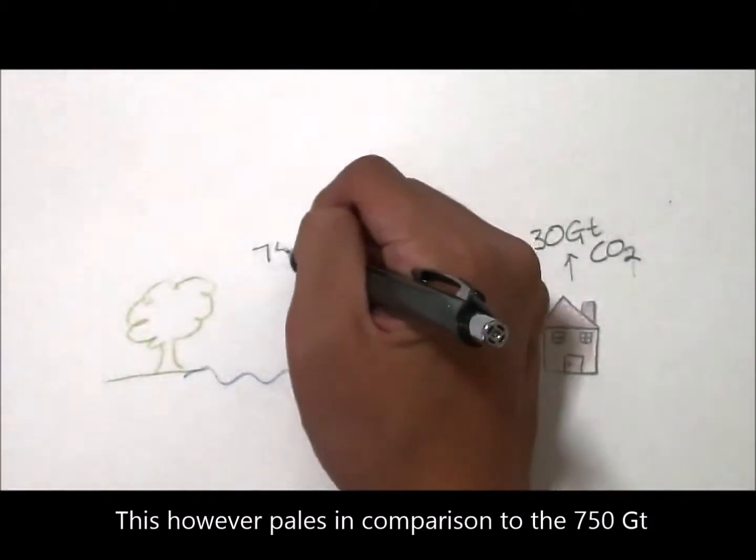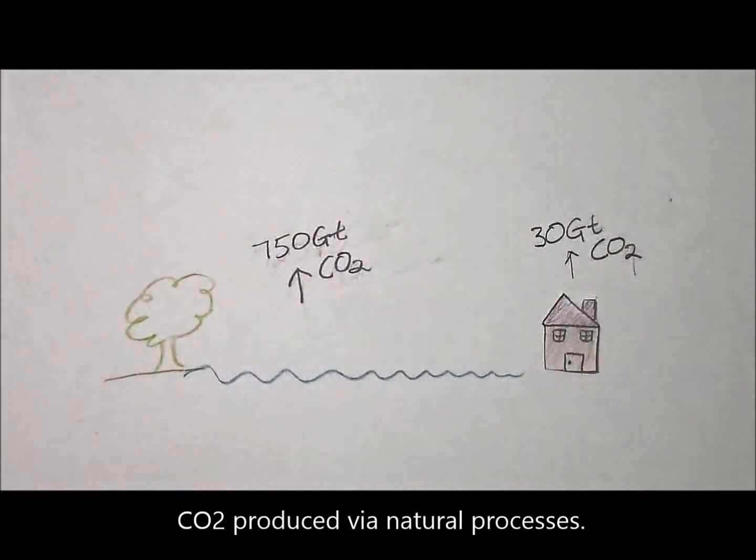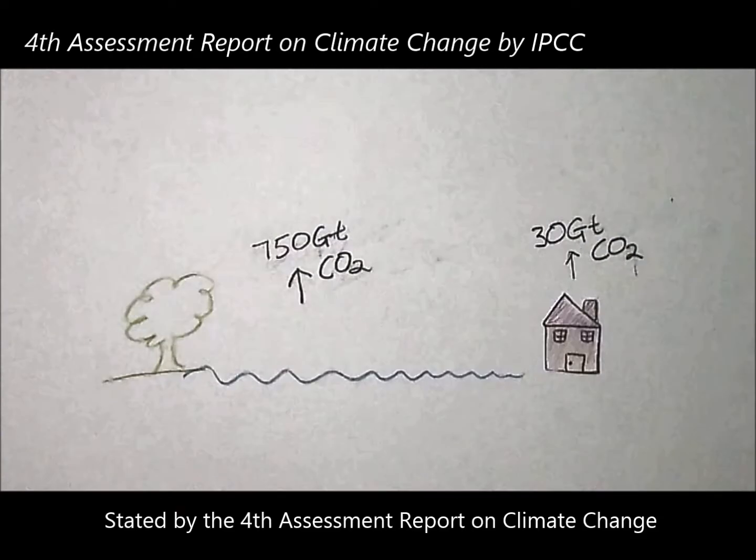This however pales in comparison to the 750 gigatonnes of CO2 produced via natural processes, stated by the fourth assessment report on climate change by the Intergovernmental Panel on Climate Change.